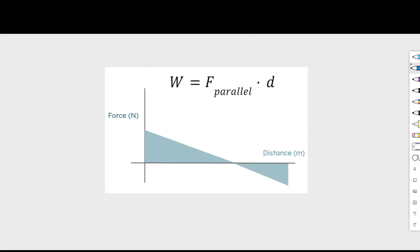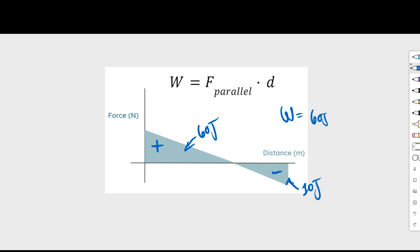There is one more concept before I show you a more complex situation. If we sum up the work or solve for the area of these values, the area above the x-axis is treated as positive and below as negative. If we're asking what is the total work a force does on the system, we total up positive and negative values. So if the area above is 60 joules and the area below is 10 joules, the total work equals 60 joules plus negative 10 joules, for a net work of 50 joules.